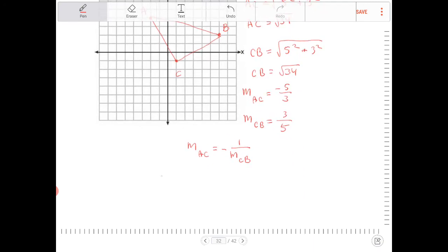So therefore, triangle ABC is an isosceles right triangle. So again, it's true because of this fact here and because CB is equal to AC.